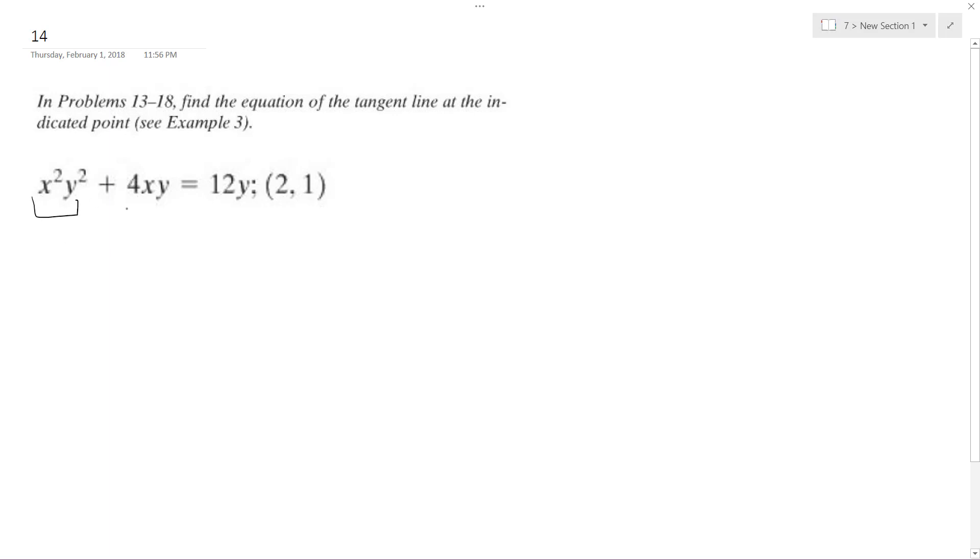So first part, well both of these parts actually I'm going to use the product rule. So I'm going to get 2xy squared plus x squared times 2y y prime plus 4y and then plus 4xy prime or dy dx and then is equal to 12y prime.